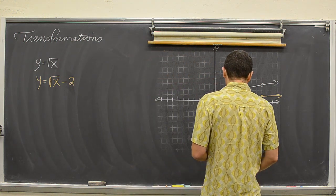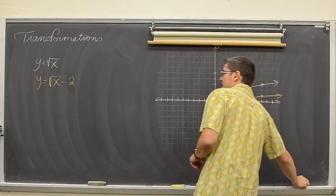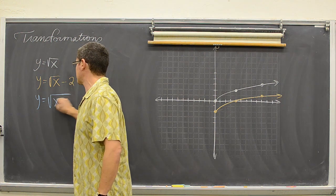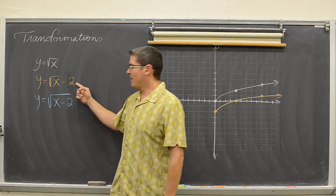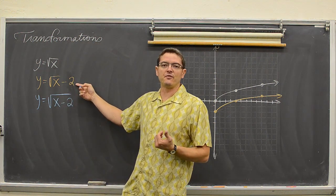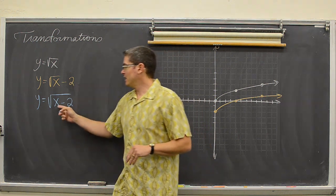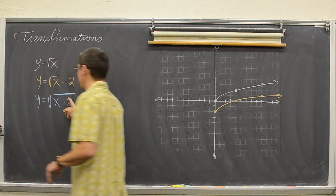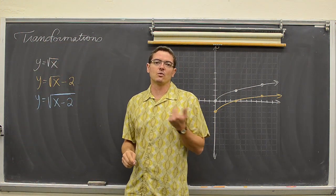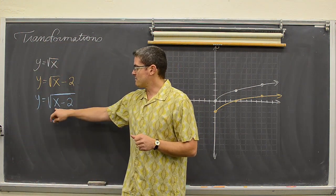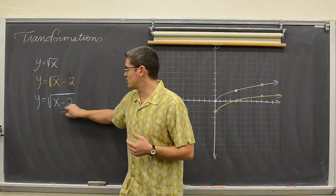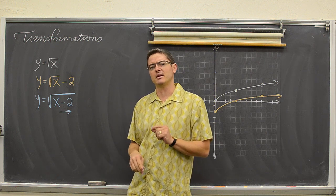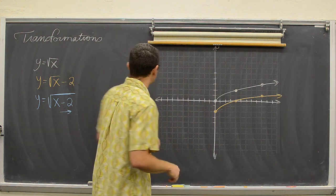Now what if I wanted to graph y equals the square root of x minus two, where the minus two is inside the square root? A plus or minus inside your function is a movement left or right. When it is minus two inside the function, that is a shift to the right two places — not to the left like you might think because of subtraction, but to the right two.